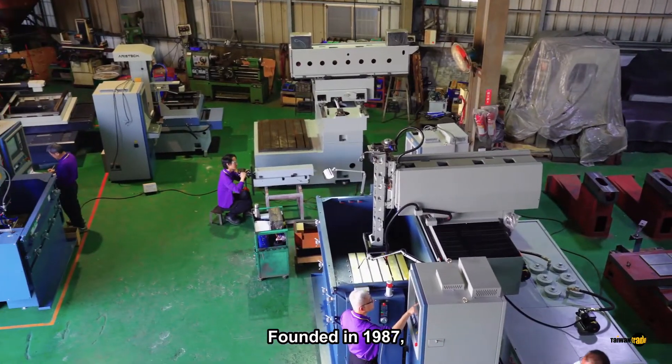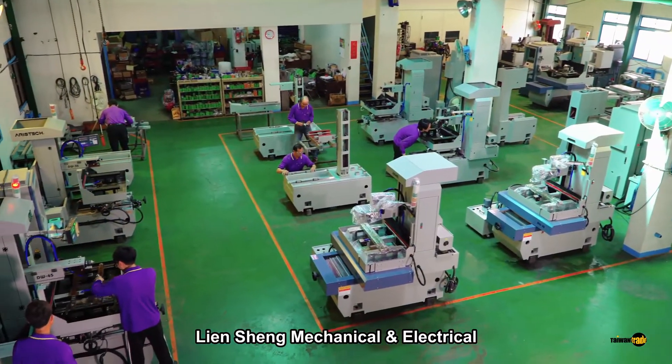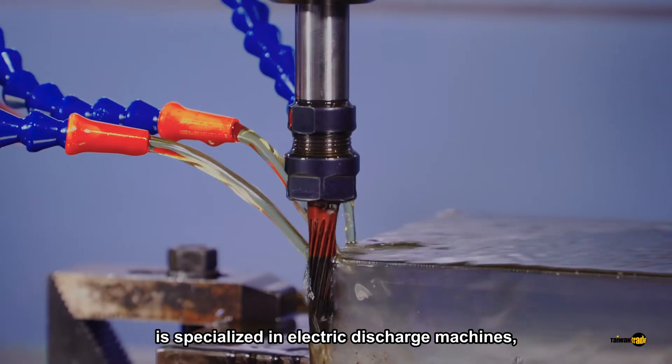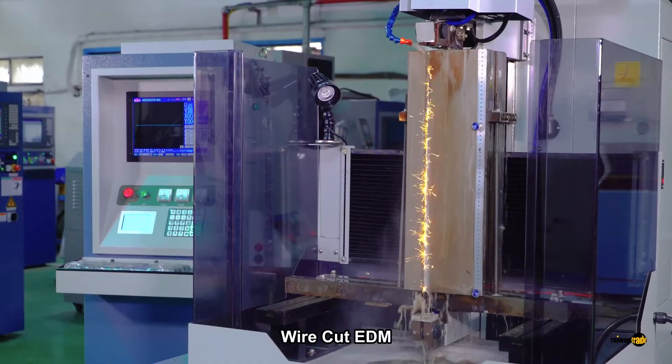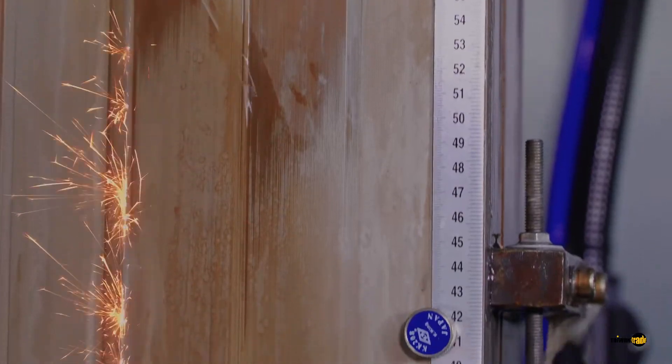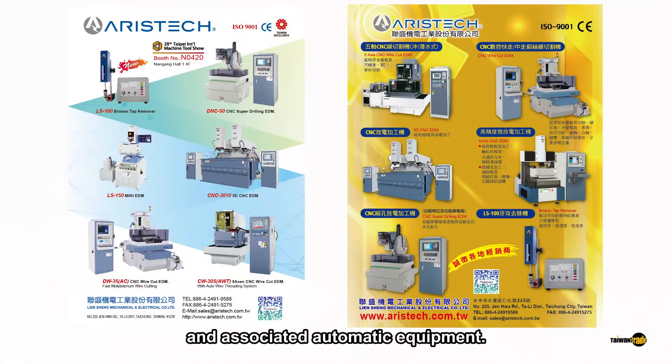Founded in 1987, Lian Shen Mechanical and Electrical is specialized in electric discharge machines, wire cut EDM, and associated automatic equipment.